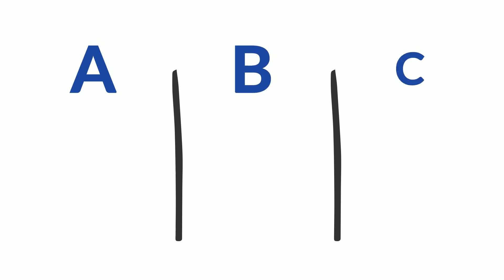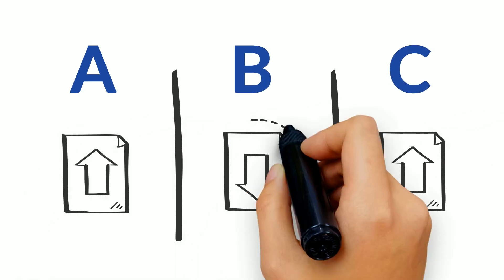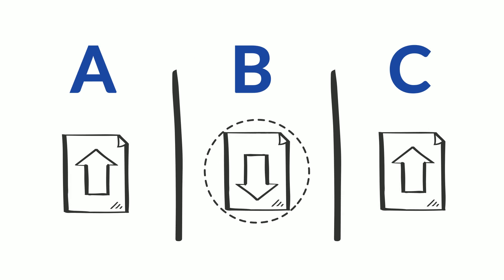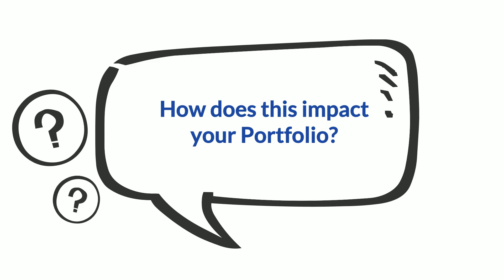Say your fund comprises of stocks A, B and C. Now, even if one of the stocks takes a beating, you're secured against the dip by diversifying in the other stocks. How does this impact your portfolio?